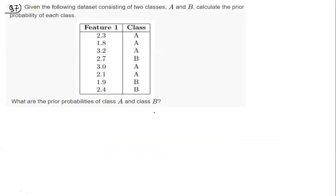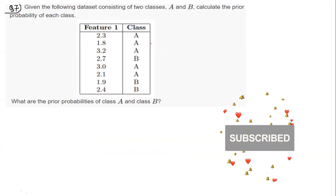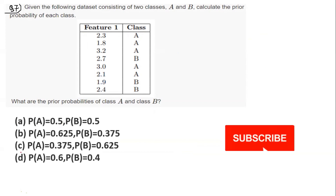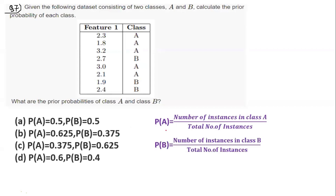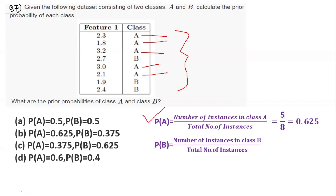Question number seven: given a dataset consisting of two classes A and B, calculate the prior probability of each class. P(A) = number of instances in class A / total number of instances. Counting class A: 5 instances; total instances: 8. So P(A) = 5/8 = 0.625. Similarly, P(B) = 3/8 = 0.375. So option B is our answer.